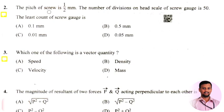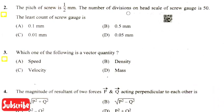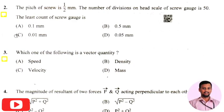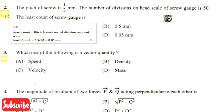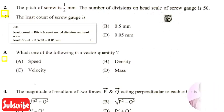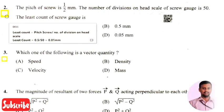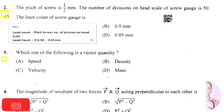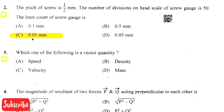The next question: the pitch of a screw is half mm, and the number of divisions on the head scale of the screw gauge is 50. The least count of the screw gauge — the right answer is option 3, that is 0.01 mm. Least count is calculated using the formula: pitch divided by number of divisions on the head scale. So 0.5 divided by 50 equals 0.01 mm.